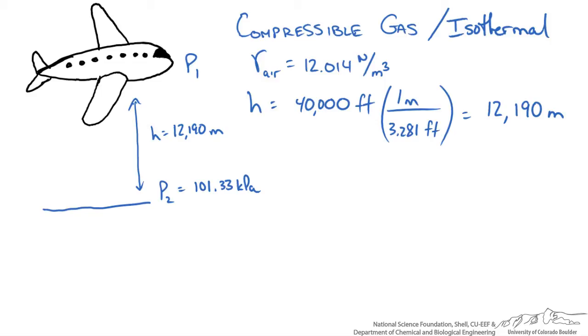Our relationship for pressure and height for compressible gas is going to be P1 equals P2 times exponential negative g for the gravitational constant, R T naught, where R is the gas constant, times our difference in elevation.